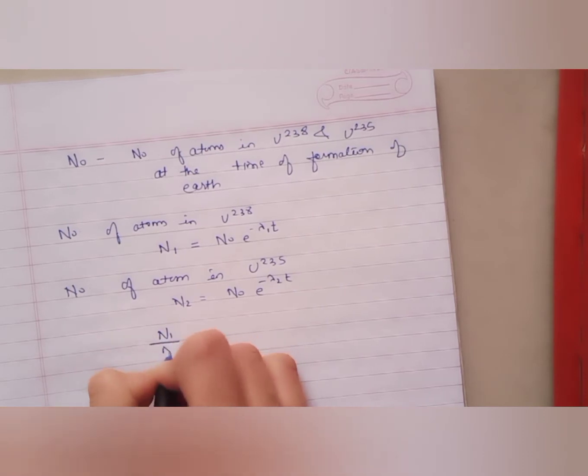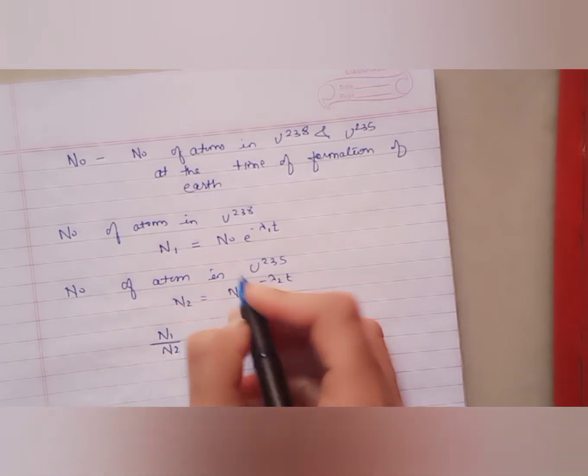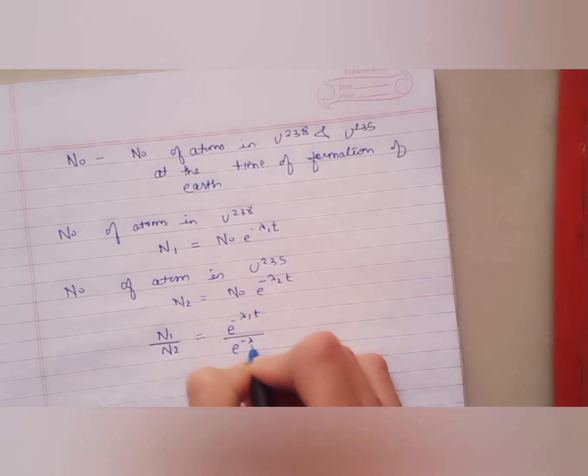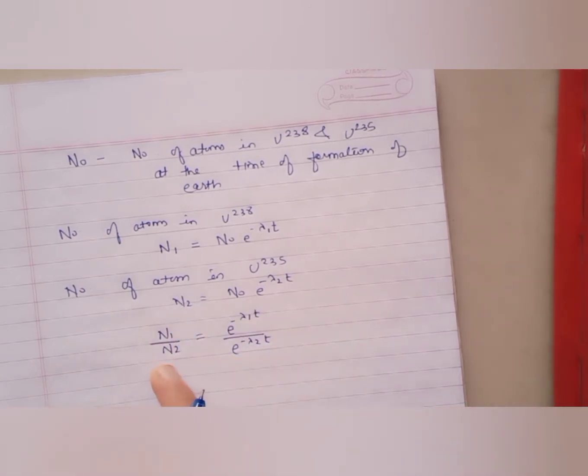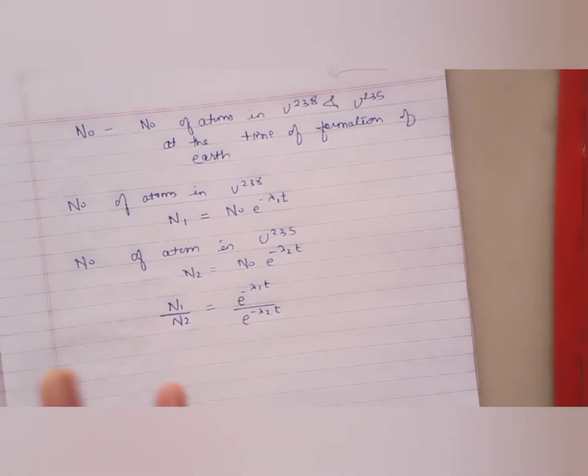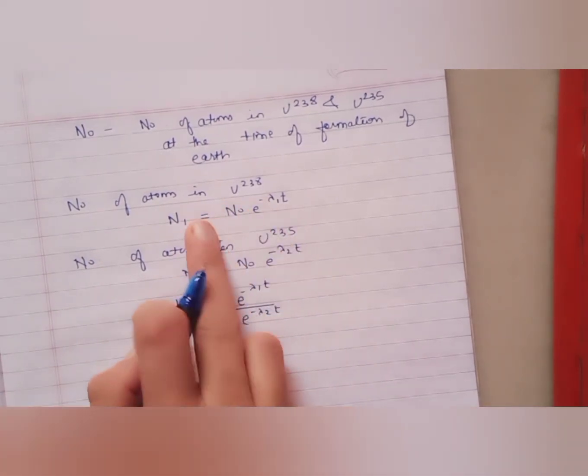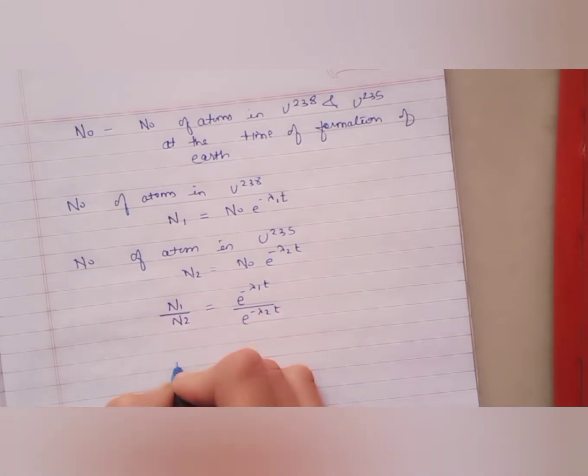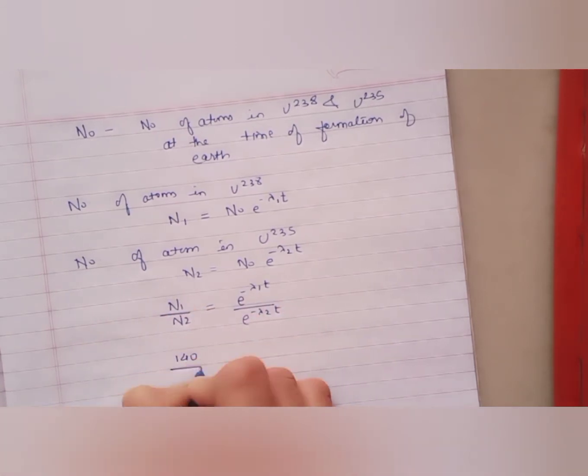We will get N₁/N₂ equals N₀ will get cancelled, and we will get e^(-λ₁t)/e^(-λ₂t). Now, N₁/N₂ is given in the problem presently. N₁ and N₂ are the atoms at time t presently, so N₁/N₂ is given to be 140 to 1.